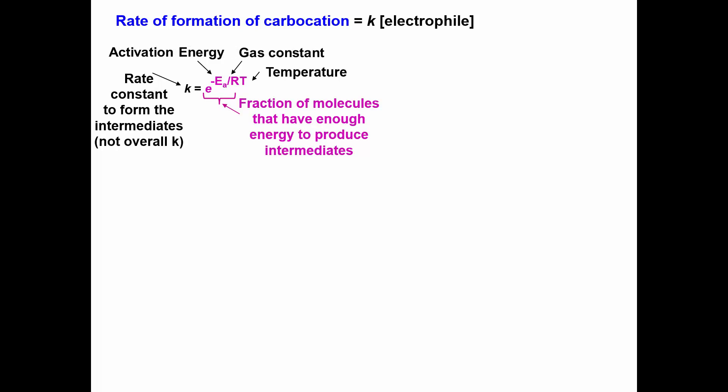The rate of reaction of forming the carbocation is dependent on the concentration of the electrophile only. The rate of reaction thus equals the rate constant times the concentration of the electrophile.